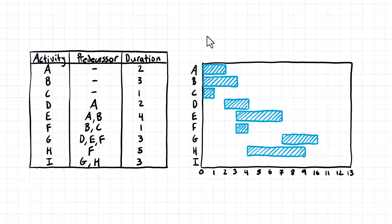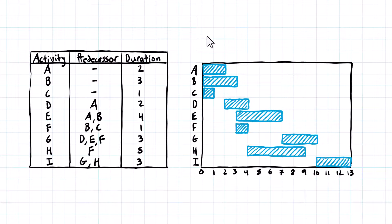Activity I is three days long and can't start until G and H are both finished. H finishes at the end of the ninth day, and G finishes at the end of the tenth day. So I has to start at the beginning of the eleventh day and comes over one, two, three days, wrapping up the project.